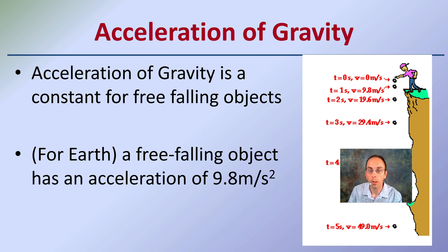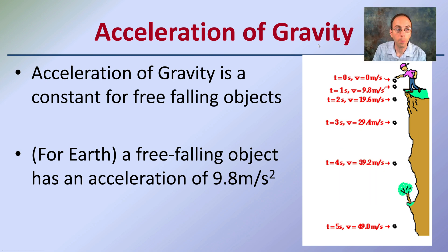The acceleration of gravity is an important factor to keep in mind. The acceleration of gravity is a constant for free-falling objects, and looking specifically at Earth, a free-falling object has an acceleration rate of 9.8 meters per second squared.